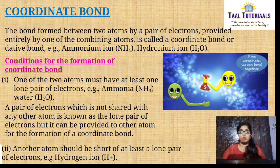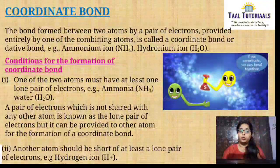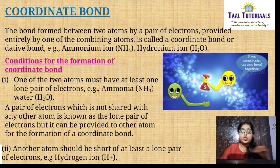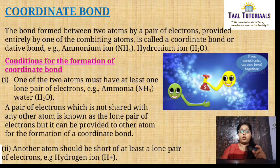Now, conditions for the formation of coordinate bond. One of the two atoms must have at least one lone pair of electrons, for example ammonia and water. A pair of electrons which is not shared with any other atom is known as the lone pair of electrons. It can be provided to the other atom for the formation of coordinate bond.